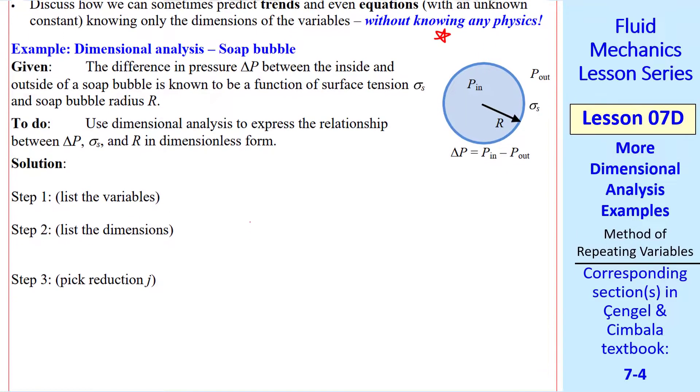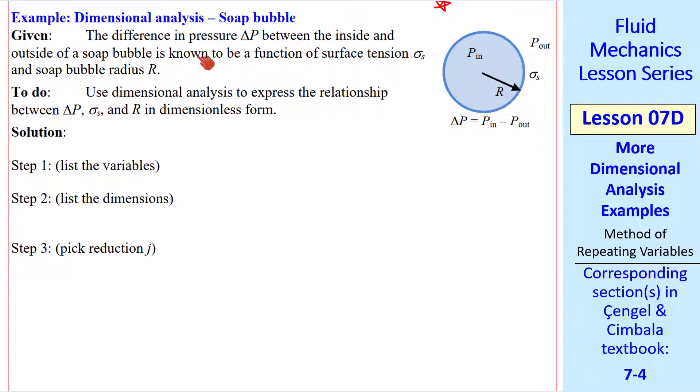For our first example, we'll look at a soap bubble. Suppose we know that the difference in pressure delta p between the inside and the outside of a soap bubble is a function of surface tension and soap bubble radius r. We'll use dimensional analysis to find a relationship between these variables in dimensionless form. We'll use the method of repeating variables that we learned in the previous lesson. Step 1, list the variables. There are only 3, so n equals 3.